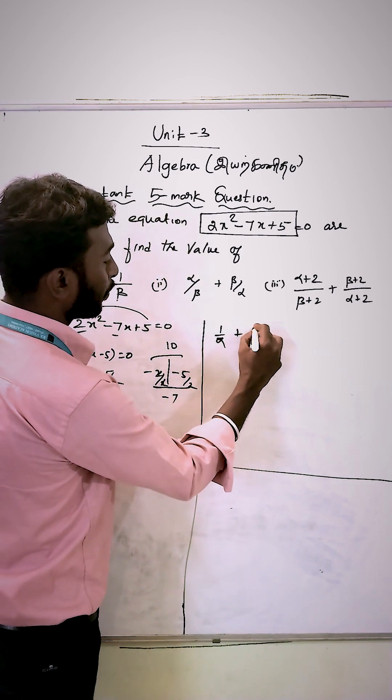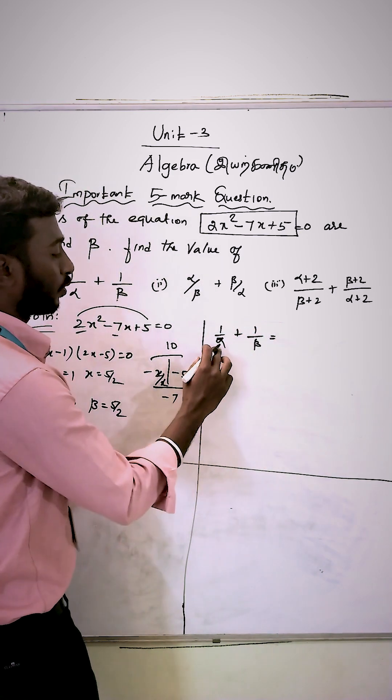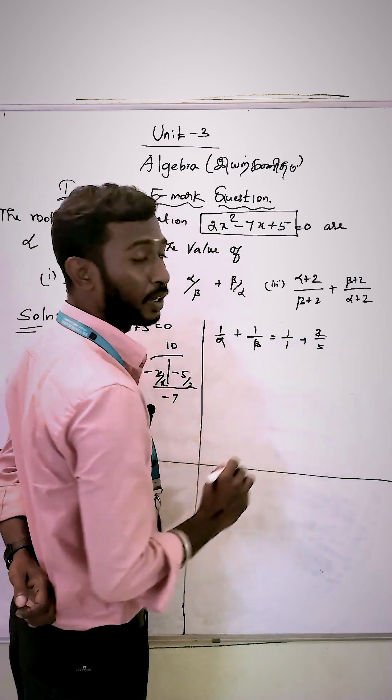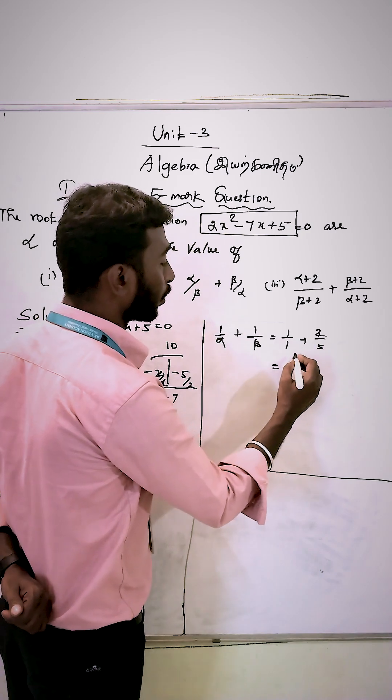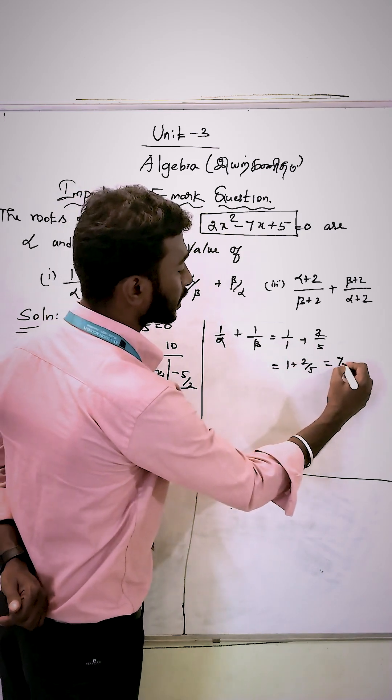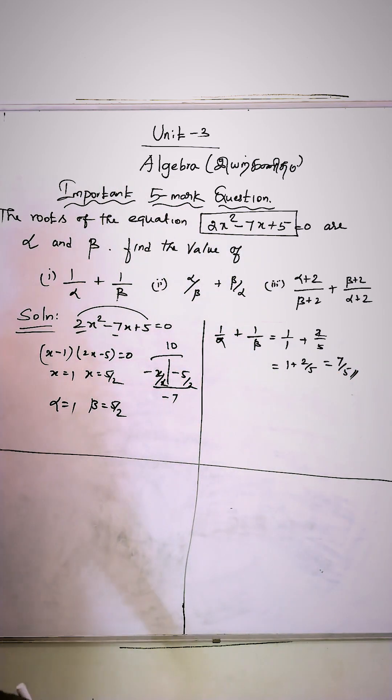Question number 1: 1 by alpha plus 1 by beta equals 1 by 1 plus 2 by 5. That is 1 plus 2 by 5 equals 5 plus 2, which is 7 by 5.